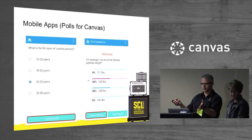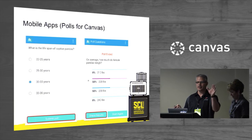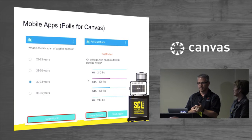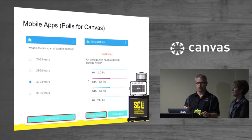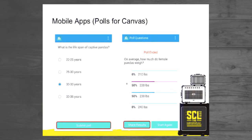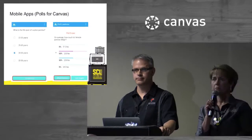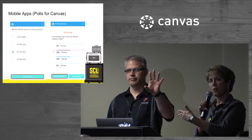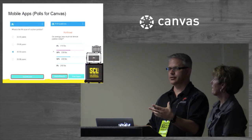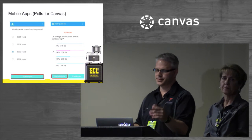Another mobile app is Polls — is anybody using Polls for Canvas? This is available for both Android and iOS and is set up to ask a quick poll question. This would be more appropriate for a traditional classroom setting if you wanted to administer a poll and get a quick result of how the audience is feeling. How many are using clickers? Could this replace your clickers? It doesn't feed into the gradebook at all right now, but it's a way to get feedback.